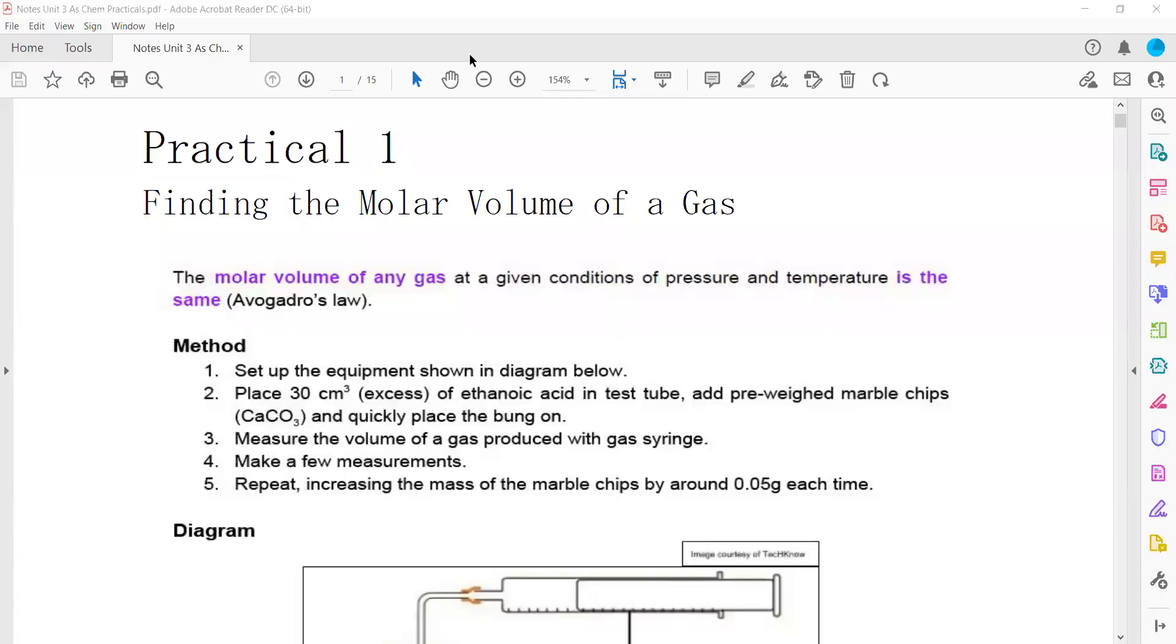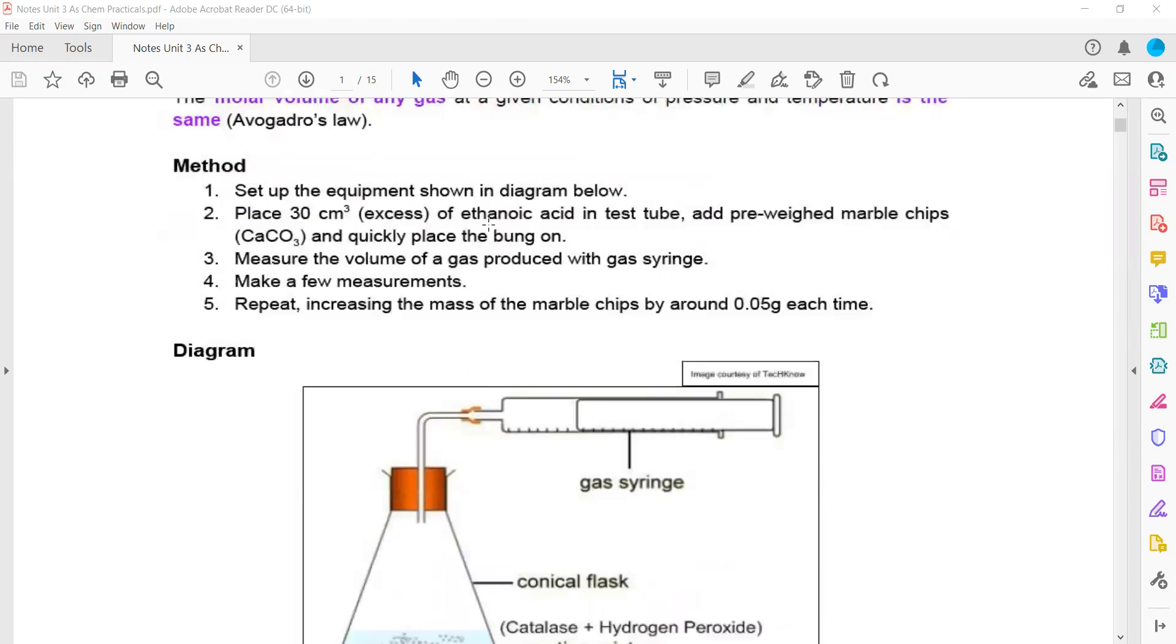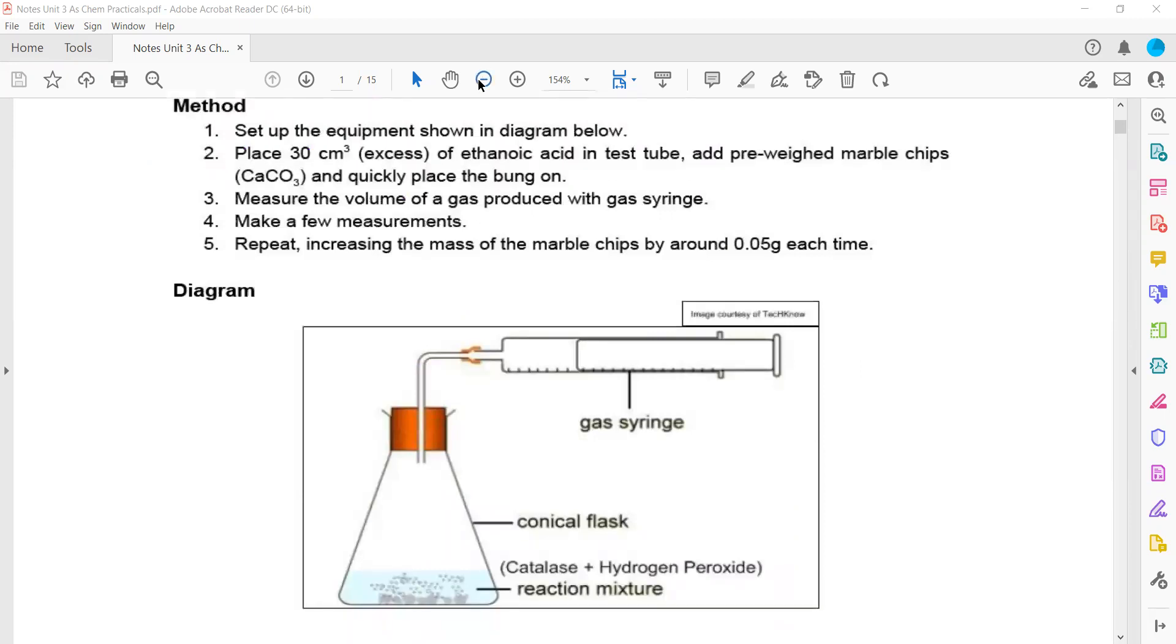The first practical in unit 3 is finding the molar volume of a gas. Molar volume means the volume occupied by one mole of a gas. The molar volume of any gas at a given temperature and pressure is the same, according to Avogadro's law.